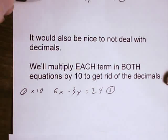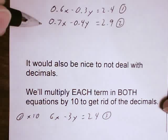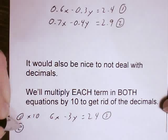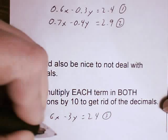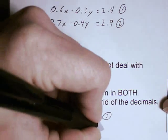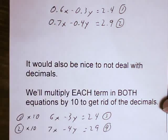Second one, if I multiply 0.7x and negative 0.4y and the 2.9 each by 10. So I'm going to do equation 2 times 10. That gives me 7x minus 4y equals 29. And I'm going to label that equation 4.